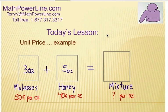Now the basic idea with the unit price type of mixture problem is this. You have one container that has some kind of compound, some element here and we'll call it molasses. Three ounces of molasses. We're going to add that to five ounces of honey.